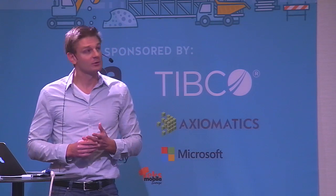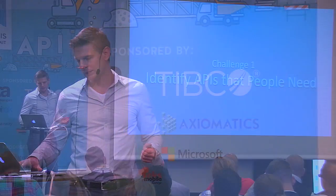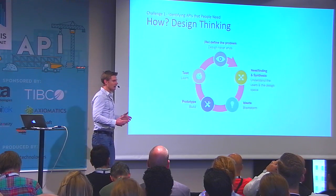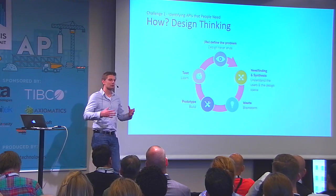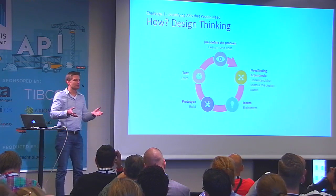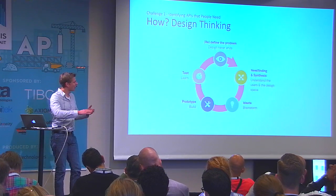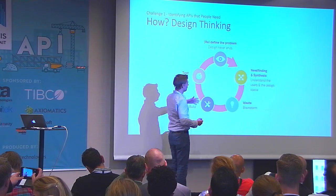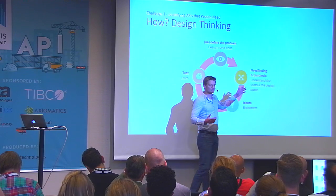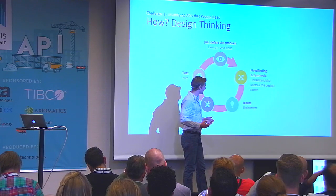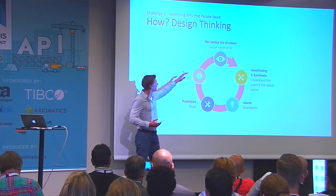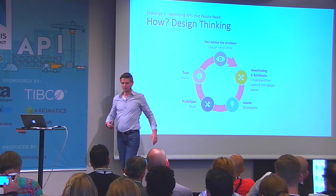Challenge number one: identify APIs that developers really need. The tool I use here is design thinking. In design thinking you try to uncover hidden needs that are not always on the surface. You start with need finding and synthesis — understanding what developers really want — then brainstorming, prototyping, testing and learning, and then starting the cycle over again. It's an iterative process.